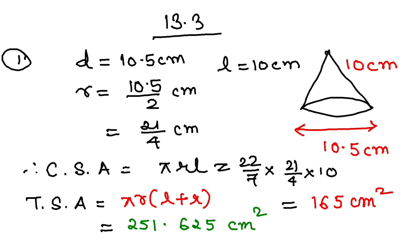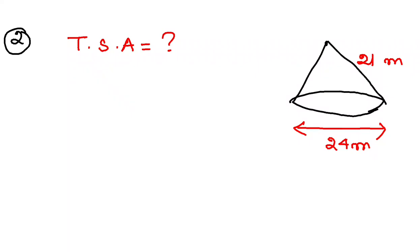Now let's go to question number 2. In question number 2, again a cone is given with base diameter 24 and slant height 21. You have to find the TSA of the cone.